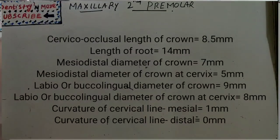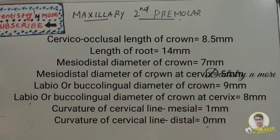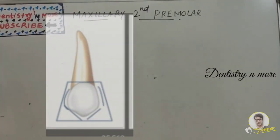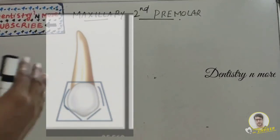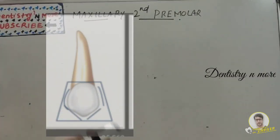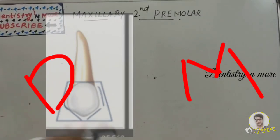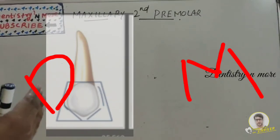Starting with the buccal aspect: the outline is almost trapezoidal. The mesial outline is slightly convex whereas the distal one is more convex. The cusp is shorter with less pointed tip, and the mesial slope of the cusp is shorter than the distal slope.